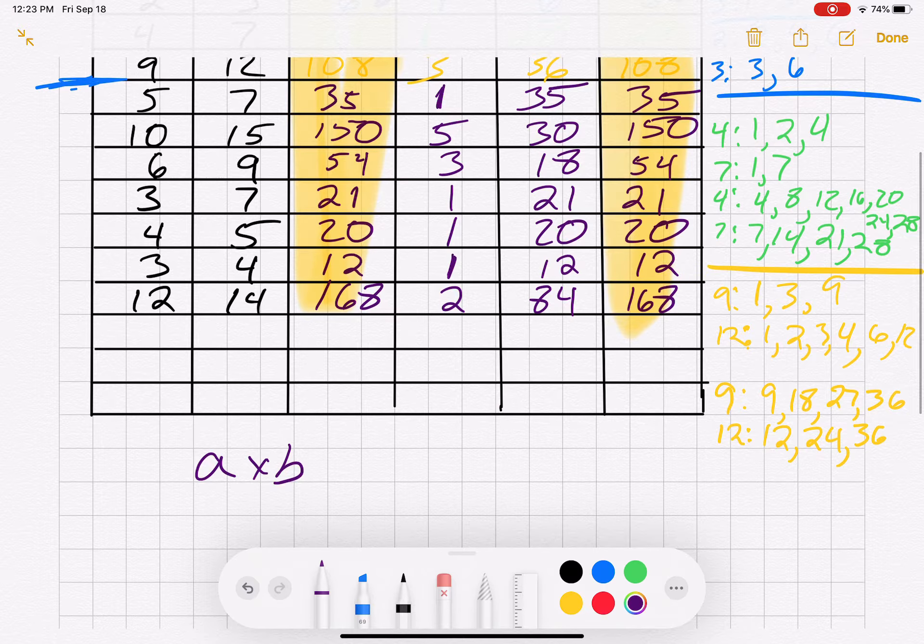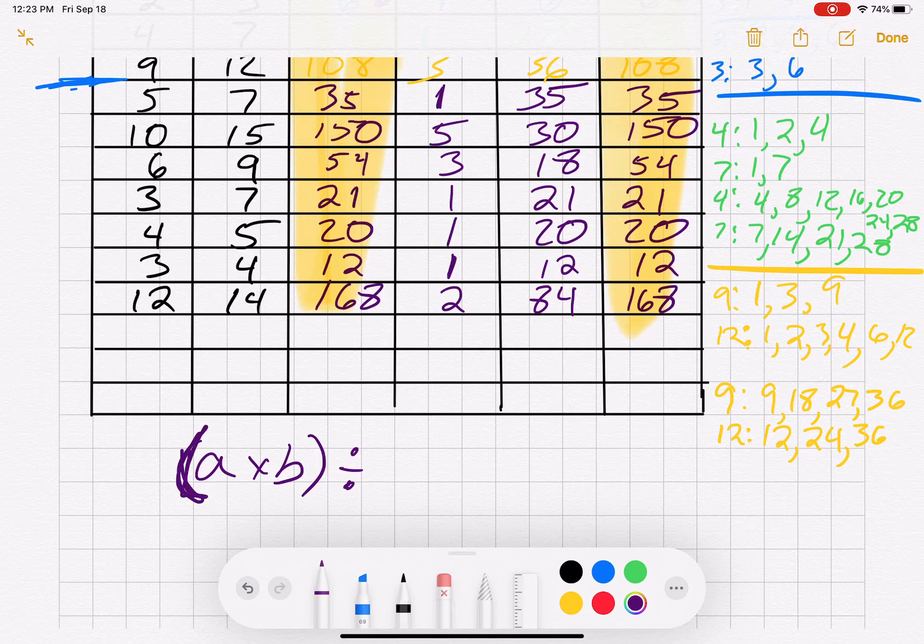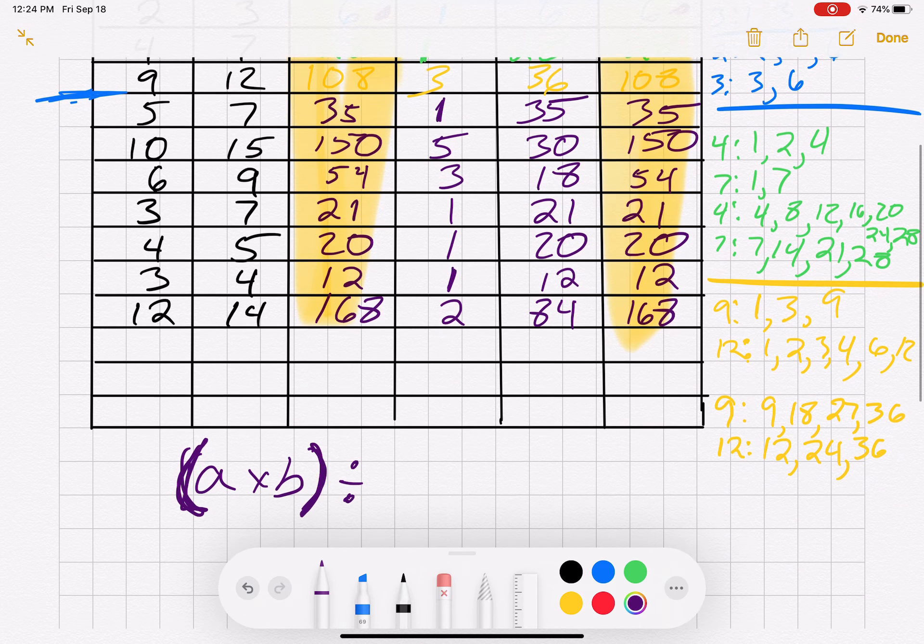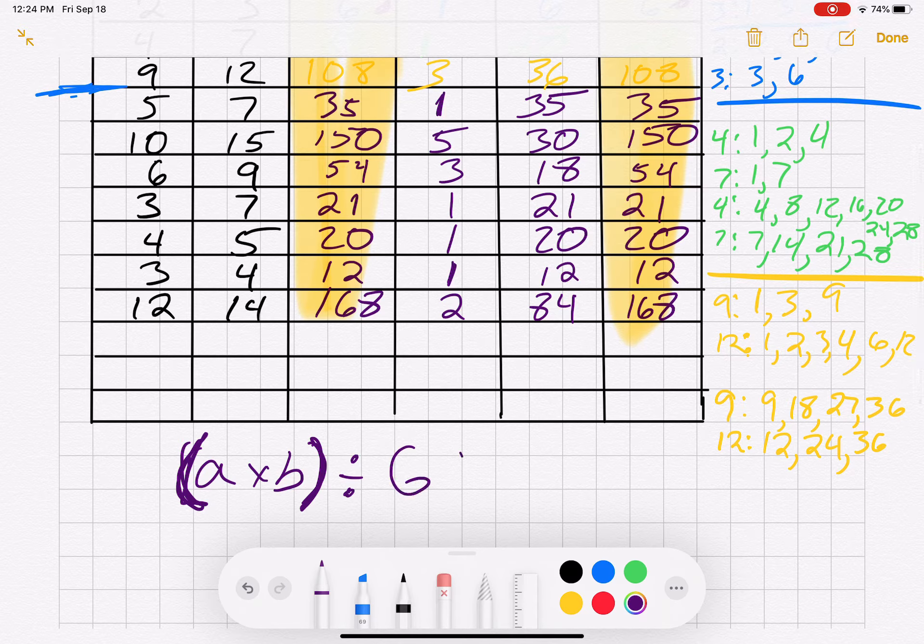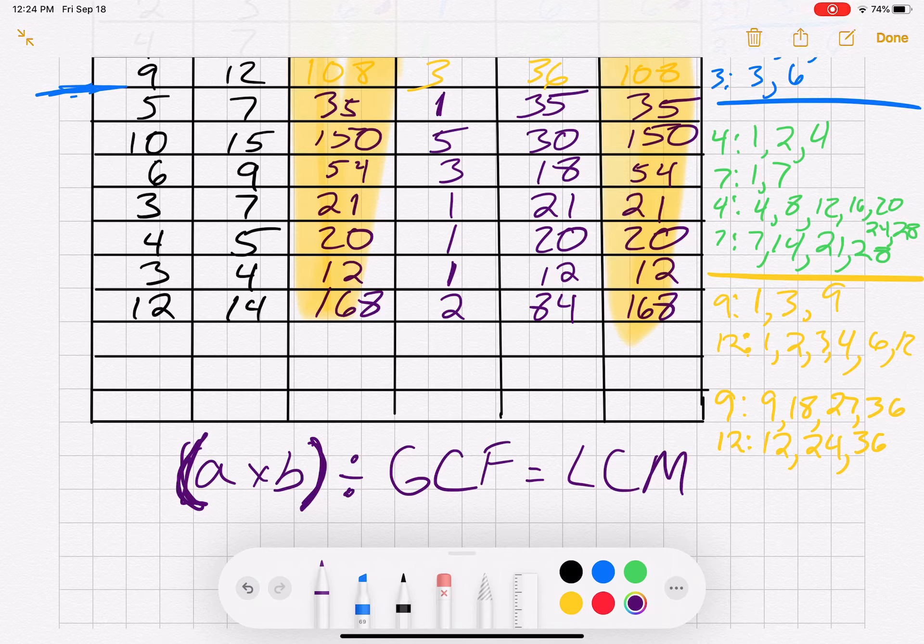So if I divide the A times B, notice I'm putting the brackets in there so that we know that we have to do this part first. So divide by the greatest common factor, we will end up with the lowest common multiple as the answer.